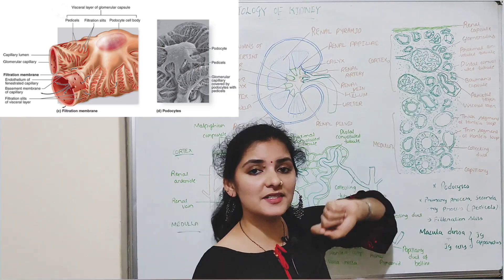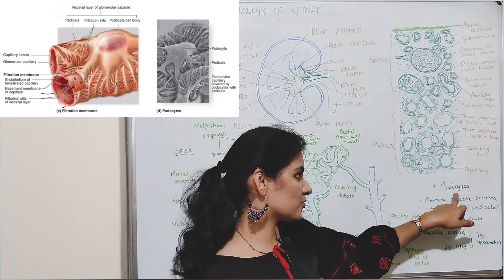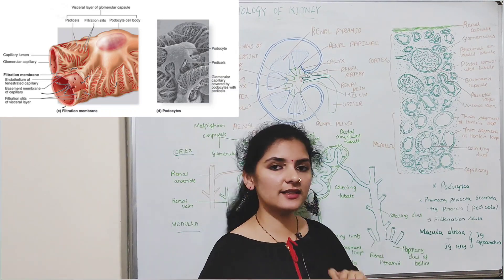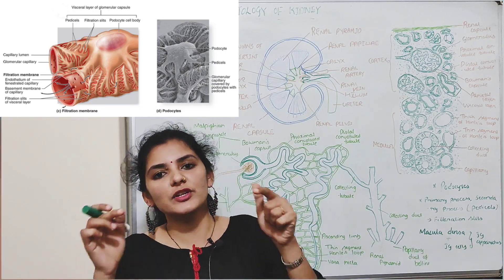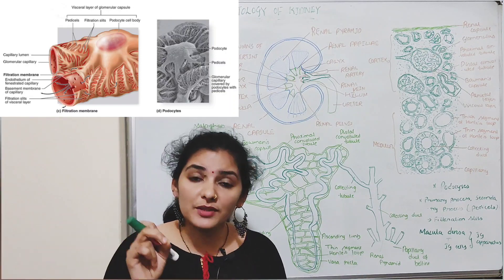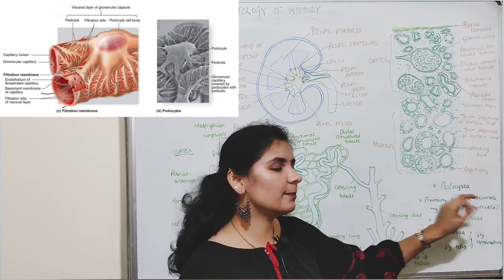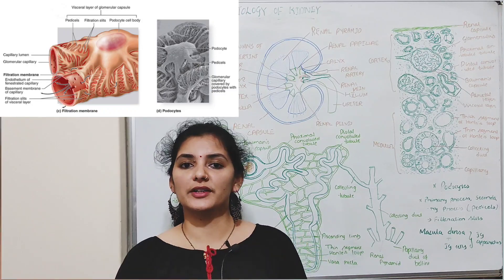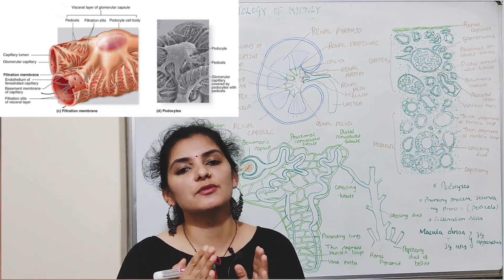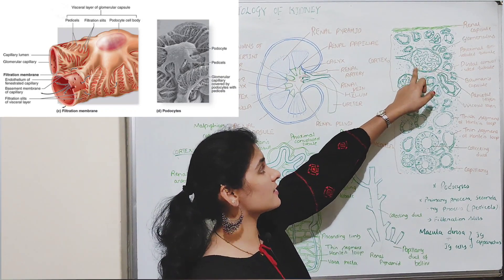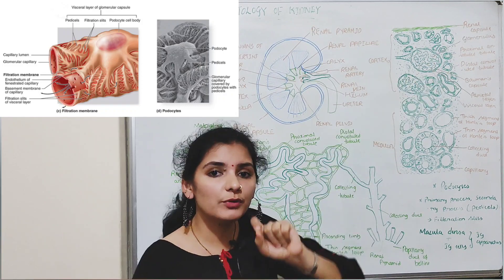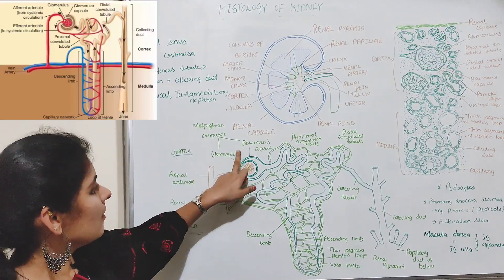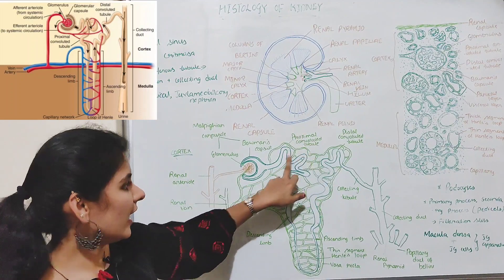The visceral layer of Bowman's capsule is present on the capillaries of the glomerulus, and those cells are called podocytes. These podocytes consist of a single cell body from which a primary process arises, and from the primary process arises a secondary process or pedicel. The secondary processes of the podocytes interdigitate with each other to form filtration slits, which help in filtering the blood to form urine. The cells of the glomerulus together with the cells of Bowman's capsule filter the blood to form urine.